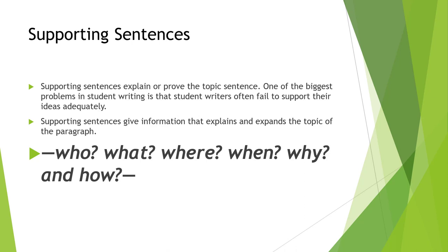Let's continue with supporting sentences. Supporting sentences explain or prove the topic sentence. One of the biggest problems in student writing is that student writers often fail to support their ideas adequately. They need to use specific details to be thorough and convincing. There are several kinds of specific supporting details: examples, statistics, and quotations. Supporting sentences usually give information that explains and expands the topic of the paragraph. They answer the questions who, what, where, when, why, and how, and give details. Good writers think of these questions when they write supporting sentences for the topic sentence.